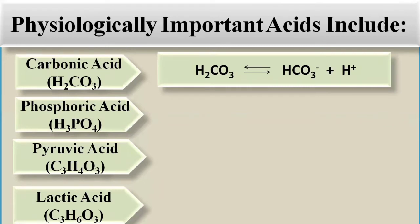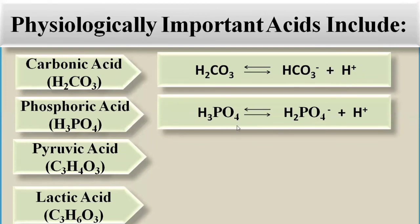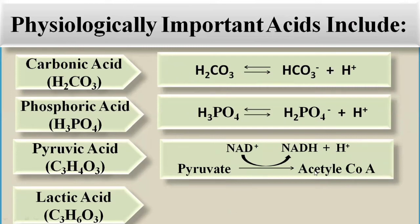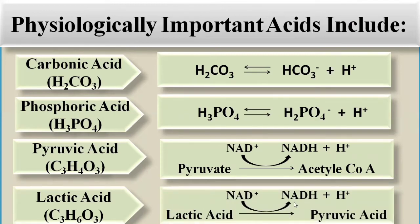Carbonic acid (H₂CO₃) dissociates into bicarbonate ion and hydrogen ion. Phosphoric acid (H₃PO₄) releases H₂PO₄⁻ and hydrogen ions. Pyruvic acid, an intermediate in carbohydrate metabolism during glycolysis, converts to acetyl-CoA; NAD is converted to NADH and a hydrogen ion is released. Similarly, when lactic acid converts to pyruvic acid, NAD converts to NADH plus H⁺. These are the key sources of hydrogen ions.